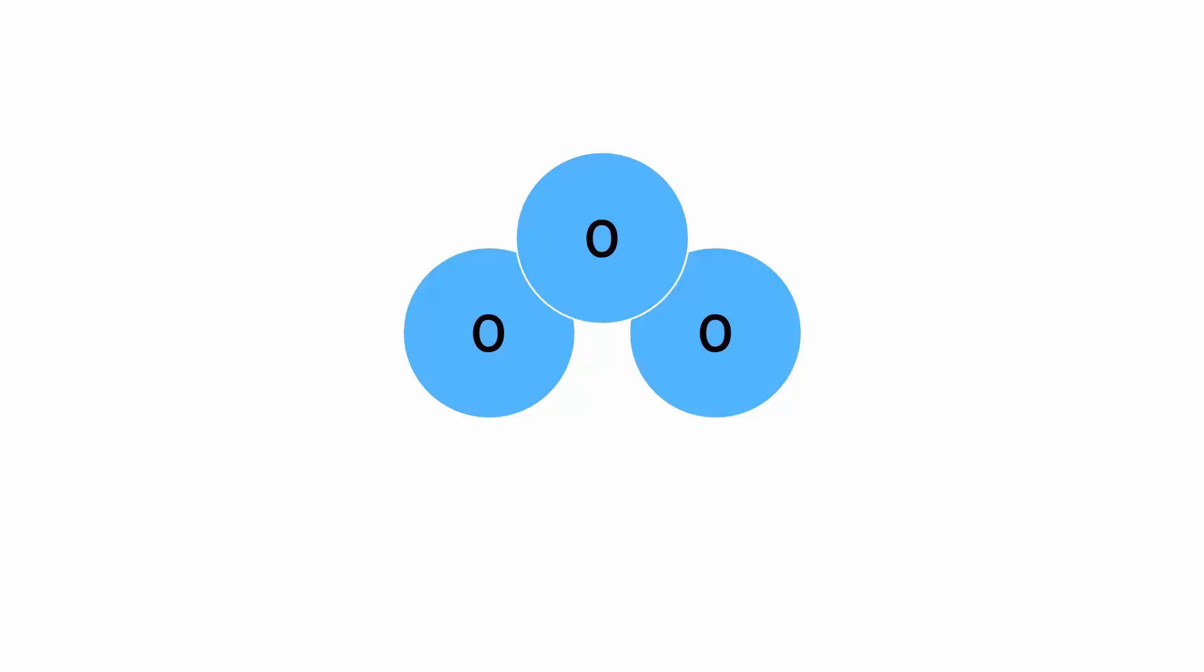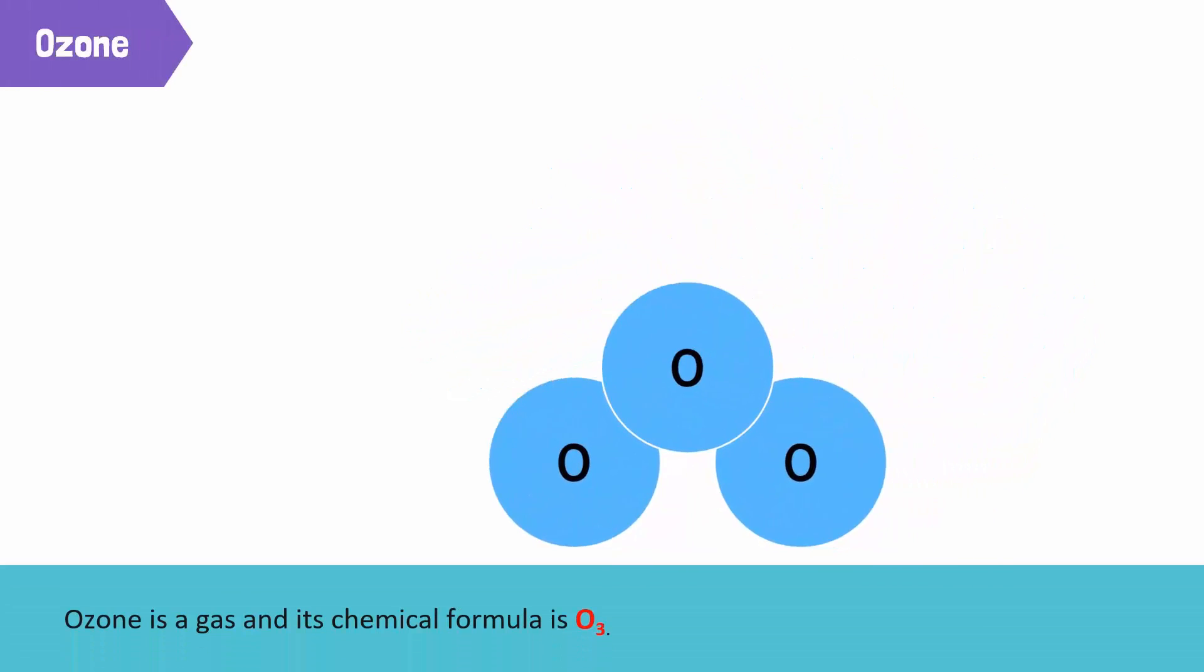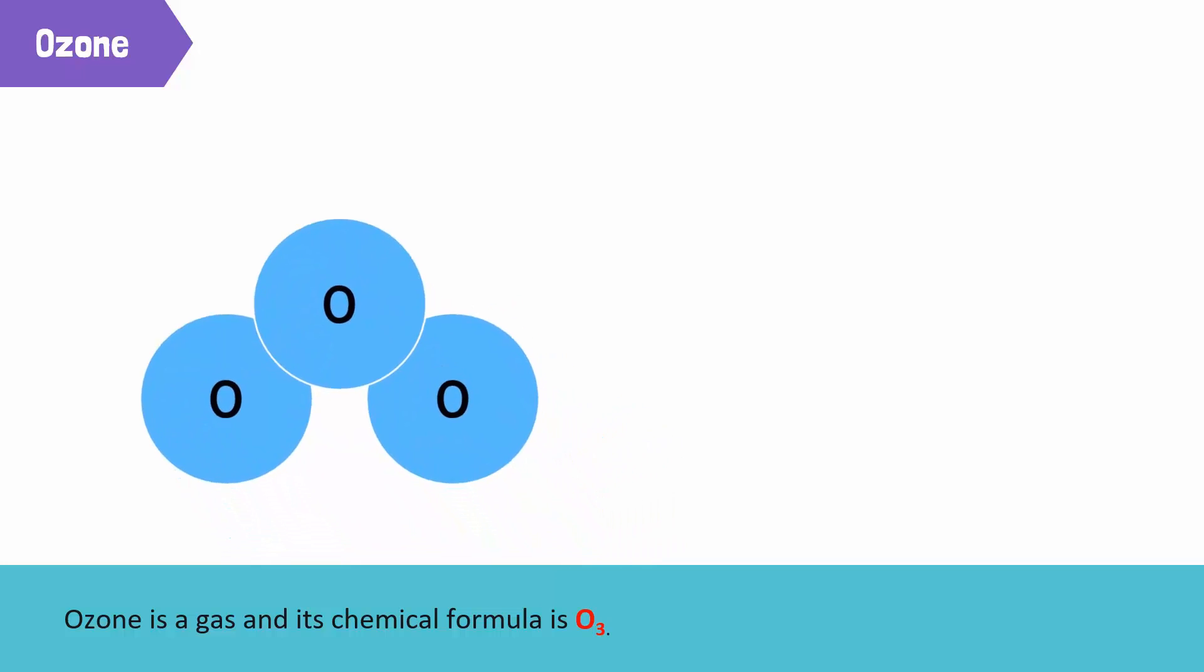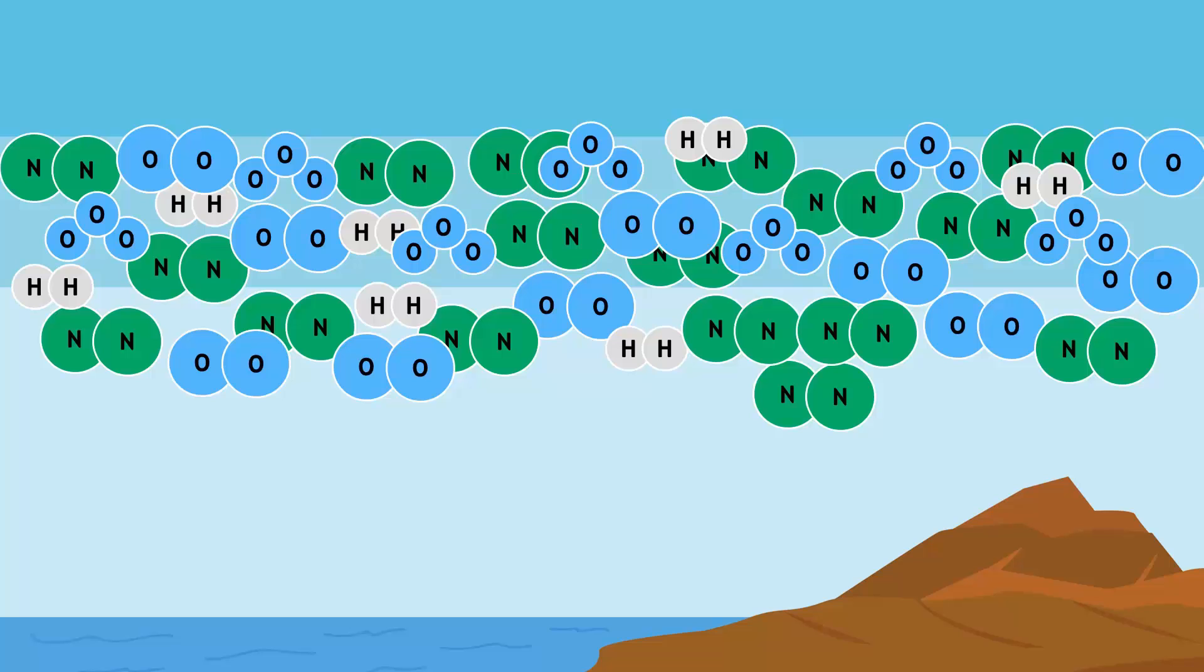Ozone is a gas with three atoms of oxygen in a molecule, and the formula is O3. The highest concentration of the ozone gas is found in the stratosphere, but its amount is still less compared to the other gases present in the stratosphere.